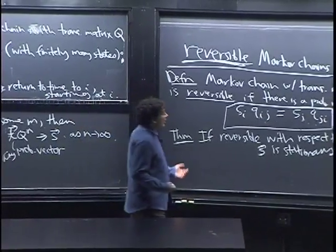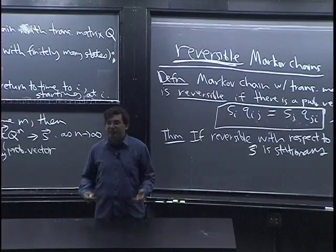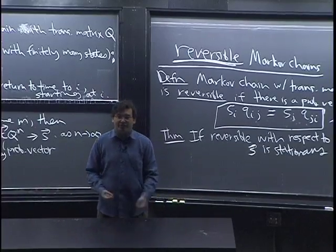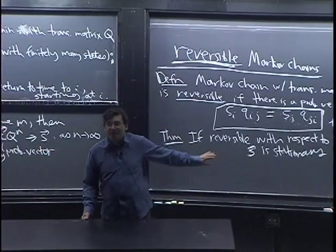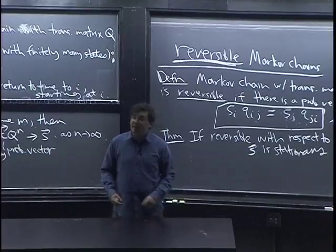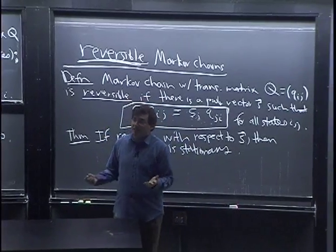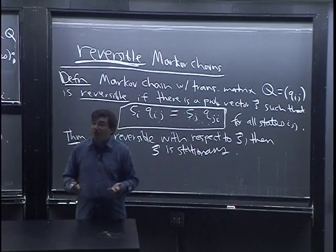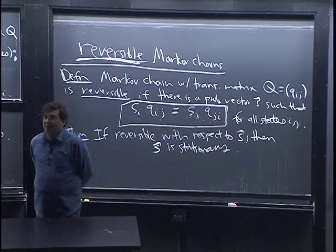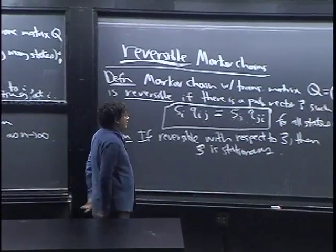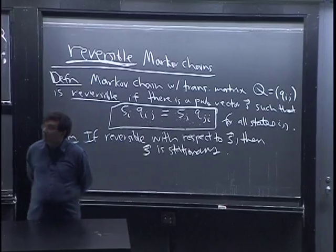It's a cute-looking equation — very useful if it holds for all states i and j. To get from the left-hand side to the right-hand side, you just swap i and j. For any particular Markov chain, it may or may not be true that you can find such an S. This doesn't tell us how to find S either. But if you assume this equation holds, then S is stationary — that's why I called it S. If reversible with respect to S, meaning this equation holds, then that S is stationary. Once this holds, we've bypassed all the matrix equations and Gaussian elimination.